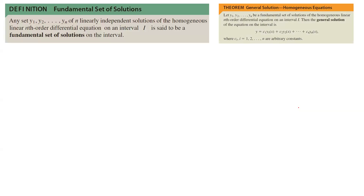Let's cover another example. Remember that if you have functions that are linearly independent, they form a fundamental set of solutions for the differential equation. You can take the linear combination of those solutions, and it is also a solution — in this case, we call it a general solution: y = c1·y1 + c2·y2 + ... + cn·yn. Remember that we are dealing with homogeneous equations, meaning on the left-hand side you have the derivatives and on the right-hand side you have 0.